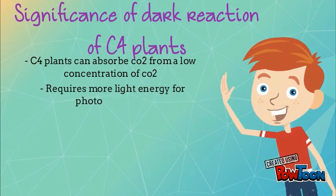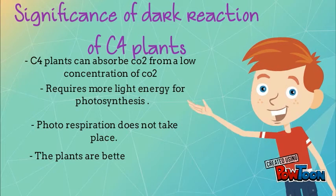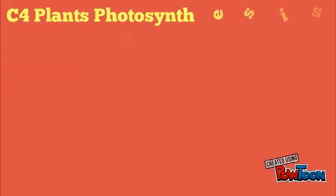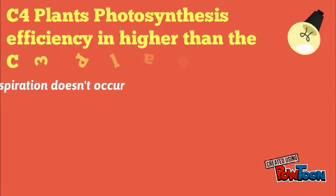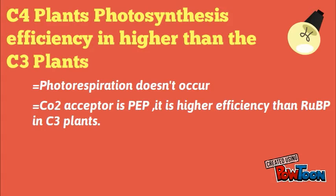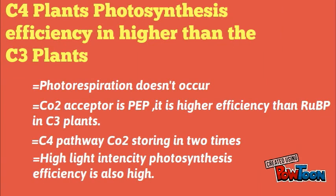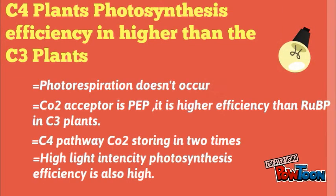Significance of dark reaction of C4 plants: C4 plants can absorb CO2 from a low concentration of CO2. It requires more light energy for photosynthesis. Photorespiration does not take place. The plants are better adapted to deserts. C4 plant photosynthesis efficiency is higher than C3 plants. The CO2 acceptor is phosphoenolpyruvate, which is more efficient than RuBP in C3 plants. C4 pathway stores CO2 two times at high light intensity, so photosynthesis efficiency is also high.